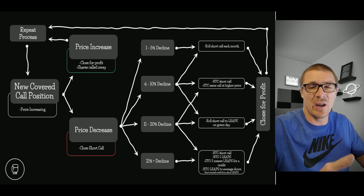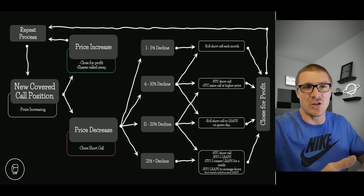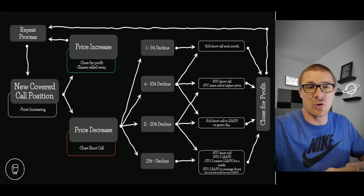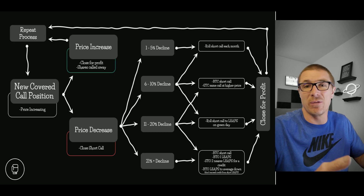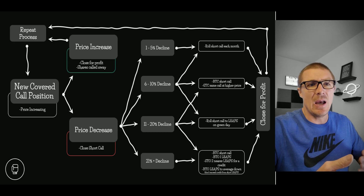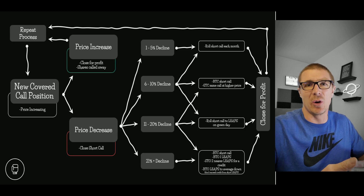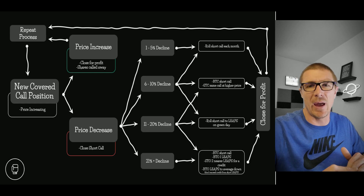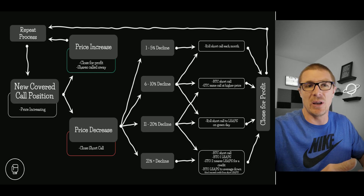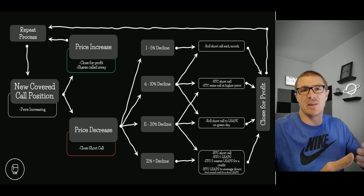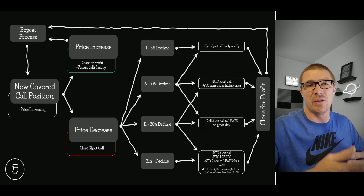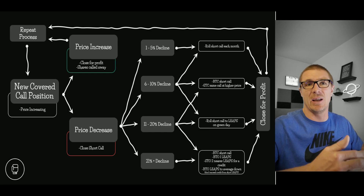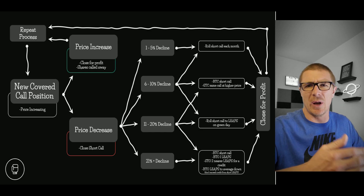If there's a large decline, you're really going to have to do some work to get this position back. The steps are: buy to close the short call, buy to open one LEAP option going out four or five hundred days, and then sell to open two near-term options. If you go 300 days to expiration on the long LEAP, you're going to want to go 250 days or the next month before that and sell two near-term LEAPs for a credit. It's better if you can sell those two LEAPs at a higher strike price than the LEAP you bought, because if price starts moving in your favor you want that long LEAP to gain profit quicker than the short calls lose money.